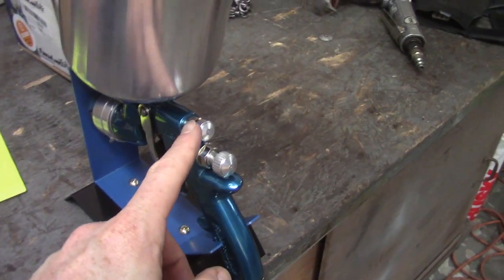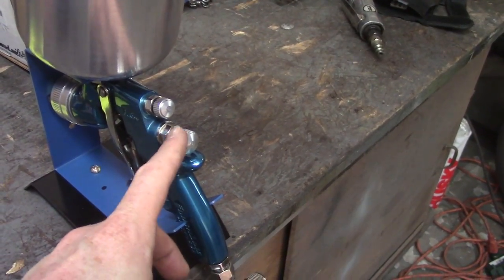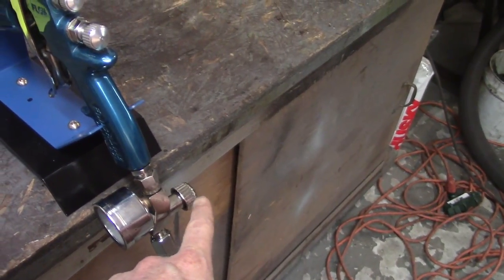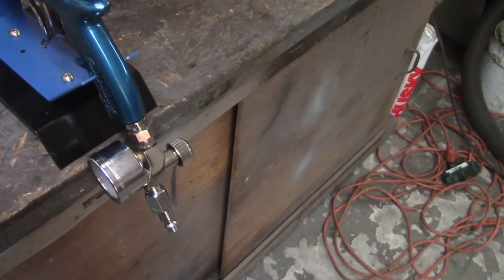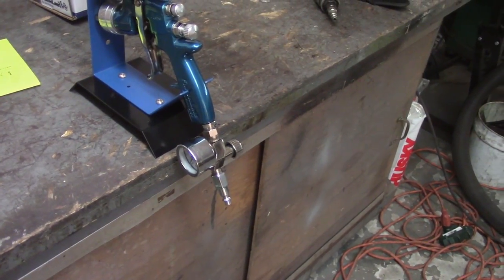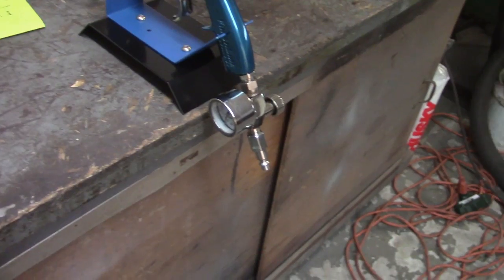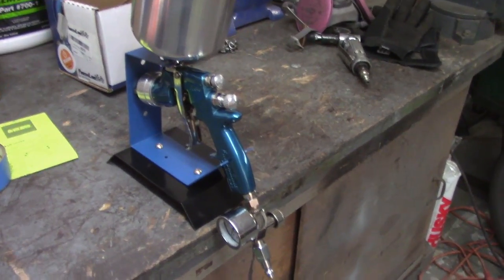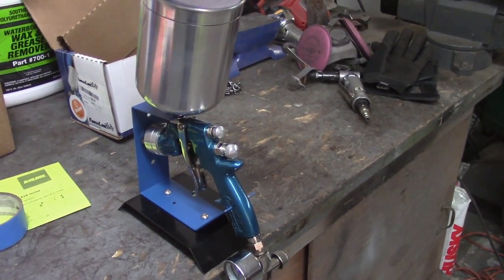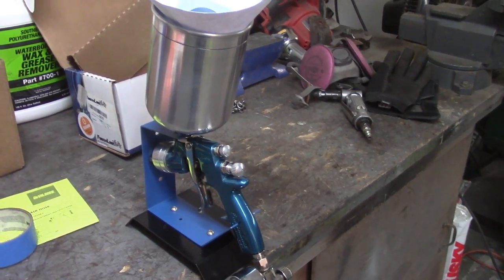I know that this guy here is the air pressure. This guy here is the paint supply, how much paint supply you have. And then the guy down here on the regulator is obviously going to be the air supply. So you set that up to about 23 pounds per square inch on that little gauge there and then let it rip.